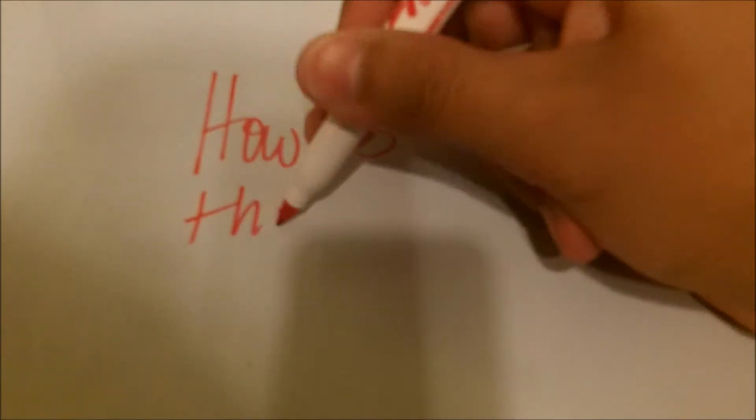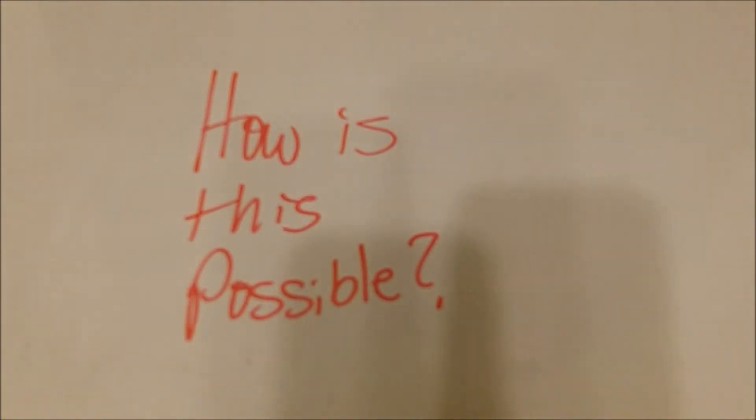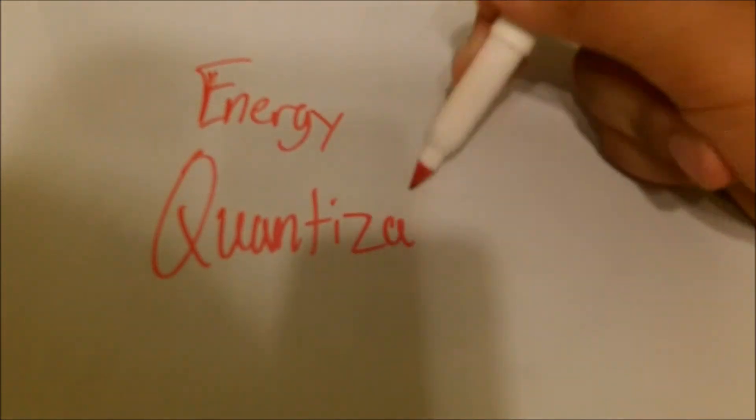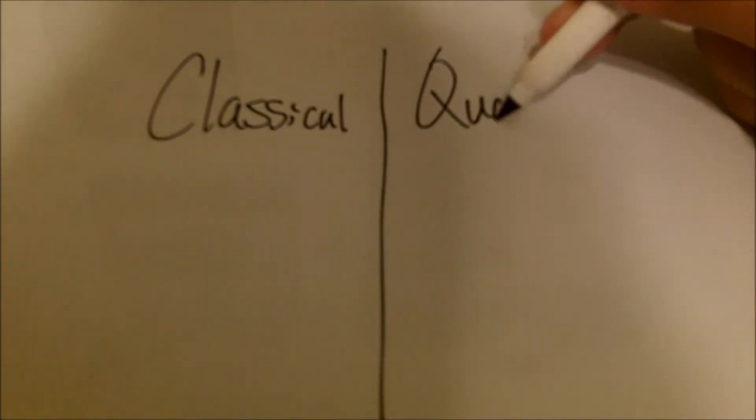So how is this possible exactly? Well let's get into it. So this all goes back to energy quantization as I was stating. So there are two distinct forms of energy quantization in both the classical realm, magic physics land, as well as the quantum realm.